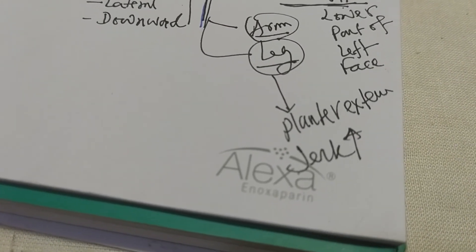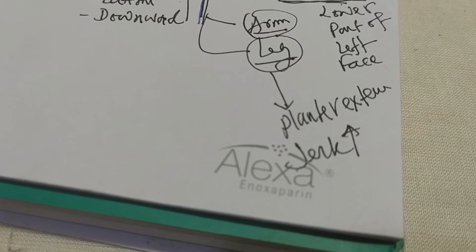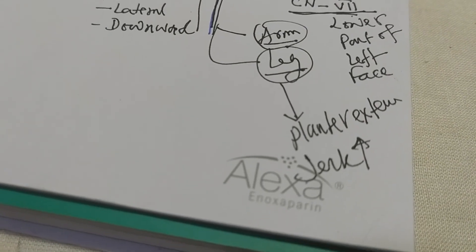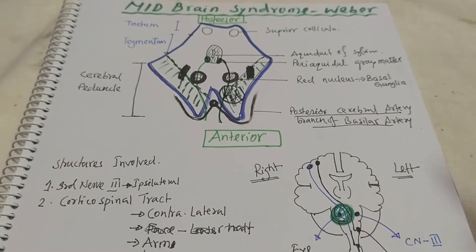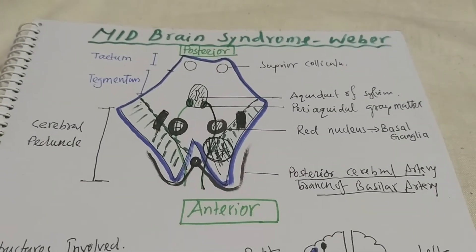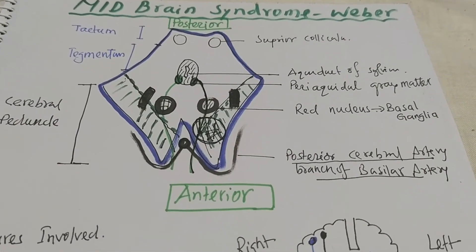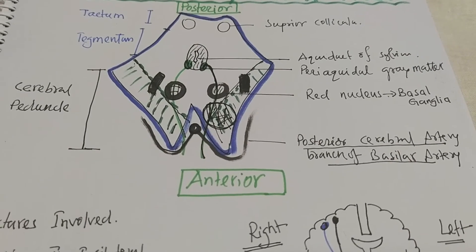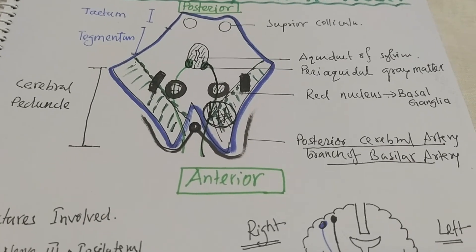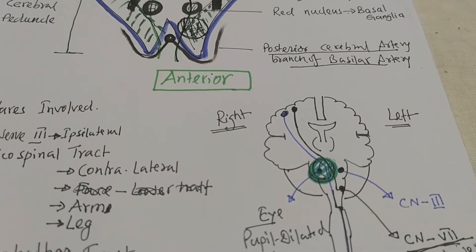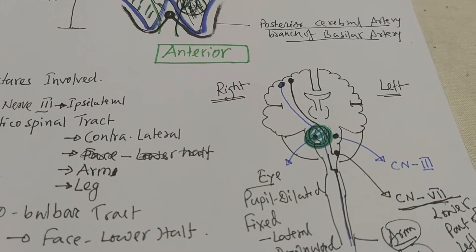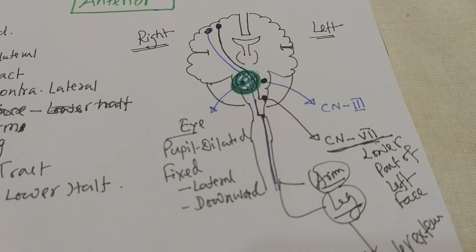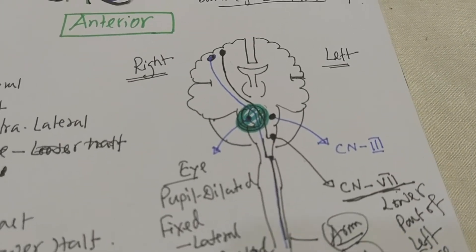The plantar reflex will be extensor on the left side. Clinically, you have to correlate these findings to diagnose Weber syndrome: ipsilateral third nerve palsy with contralateral upper motor type of palsy and facial deviation.